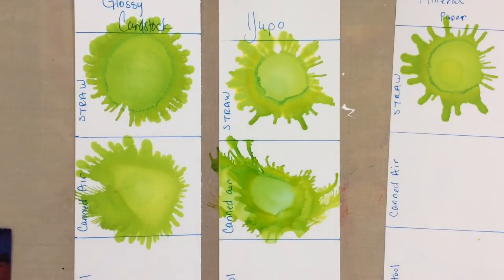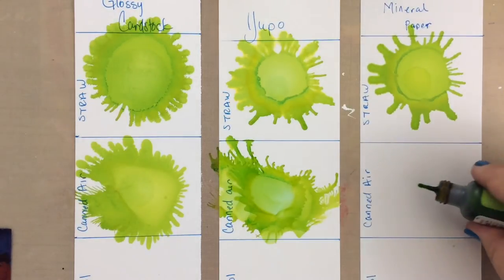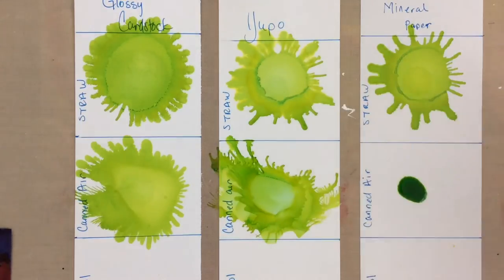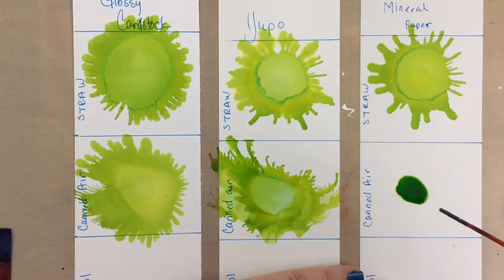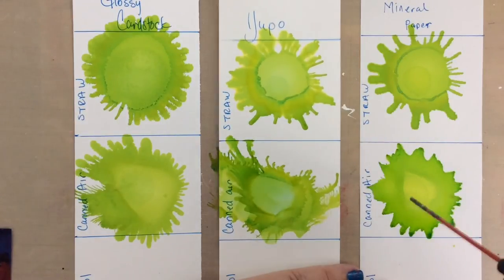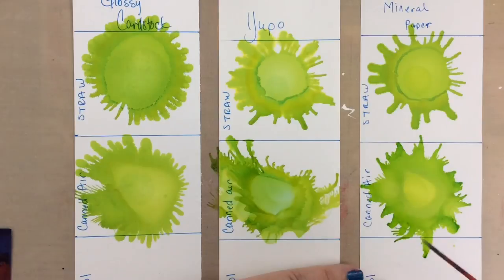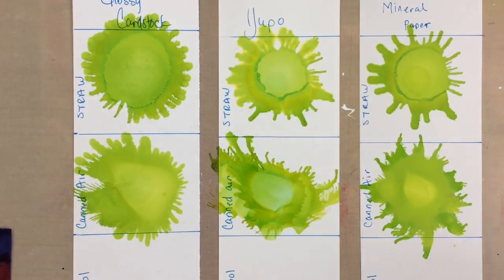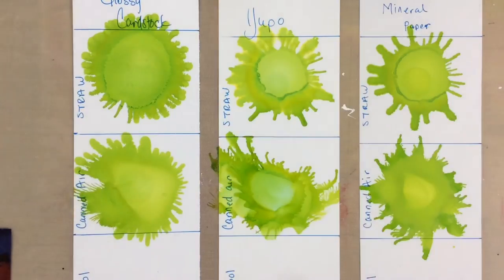All right, I'm excited to try this on mineral paper. I have not done it before and I've been putting about three drops. Here we go. Okay, so didn't move as much because of the tooth of this paper. It doesn't really soak into this paper, but this paper does have tooth, and I do have a little bit more working time because it doesn't soak in. That's kind of cool effect.